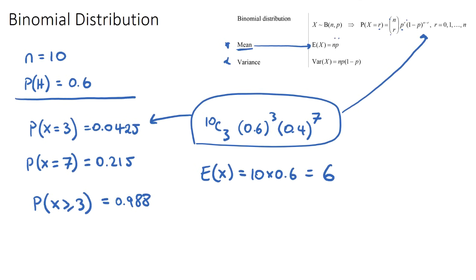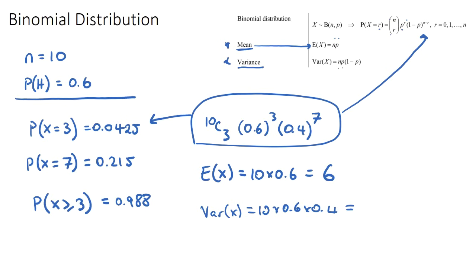Variance questions are a little more rare, but if asked for the variance of a binomial distribution, you use the same formula multiplied by the failure probability: Var(X) = n × p × (1-p). In our example that's ten times 0.6 times 0.4, which you can calculate on your calculator.